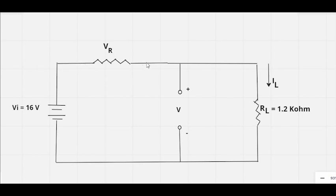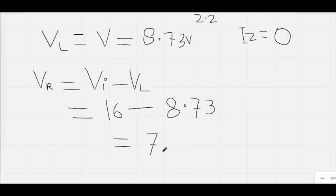Look at this picture once again. What is VR? It is the difference between these two points. Vi is 16 volts and VL we know is 8.73 volts. So just subtract 8.73 from 16. Calculating 16 minus 8.73, the answer is 7.27 volts. Do it by yourself, it's a very simple question.